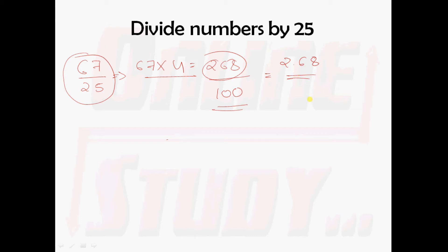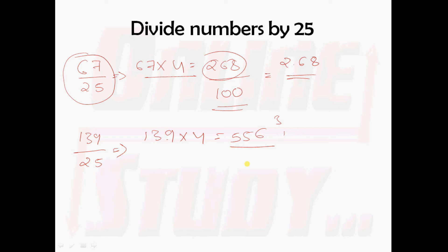We shall take one more example: 139 divided by 25. This 139 should be multiplied with 4. If you multiply: 4×9=36, carry 3; 4×3=12, plus 1 carry = 15, carry 1; 4×1=4, plus 1=5. You will get 556. And this 556 should be divided by 100, giving you 5.56. So 139 divided by 25 is 5.56.